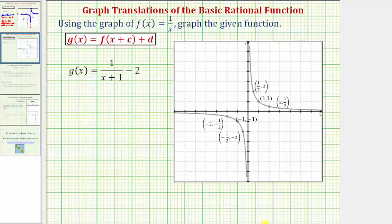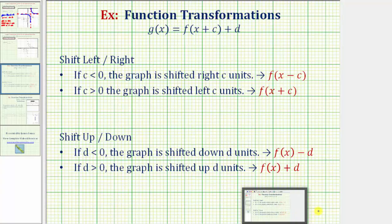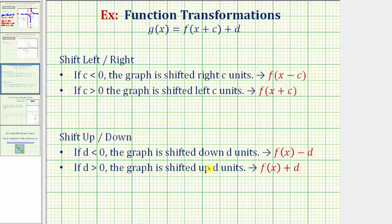We can summarize these two types of translations by saying that if c is negative, the graph is shifted right c units, and we can write g of x in the form of f of the quantity x minus c. And if d is less than zero or negative, the graph is shifted down d units, and we can write g of x in the form of f of x minus d. And if d is positive, the graph is shifted up d units, and we can write g of x in the form of f of x plus d.